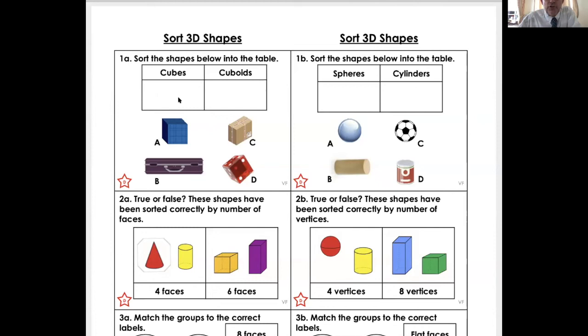A is a square. D is a square. They are a cube because they've got the same length, size. These are longer. This one's the same. That one's a cylinder. This one's a sphere. That one's a sphere, that one's a cylinder.